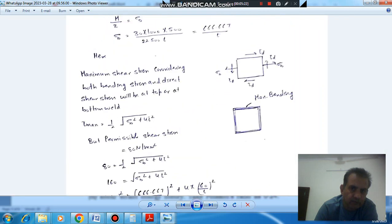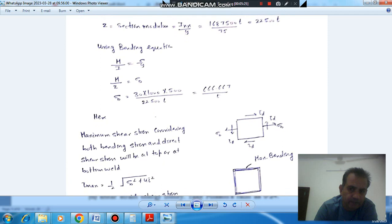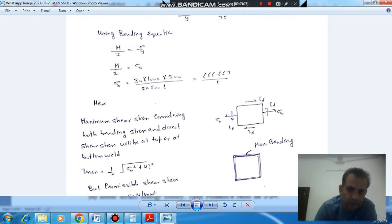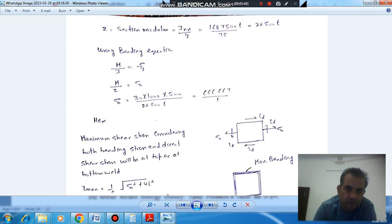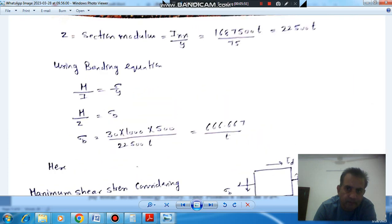So, this is moment of inertia about X axis. So, now next we calculate the section modulus. So, here we have the moment of inertia about this axis. And the section modulus is I X axis by Y. So, according to bending equation, the maximum will come either at this section or at this section. Here it will be tensile and here it will be compressive. So, Y for both will be 150 by 2 or 75. So, section modulus will be 1687500 T by 75. So, that will be 22500 T.